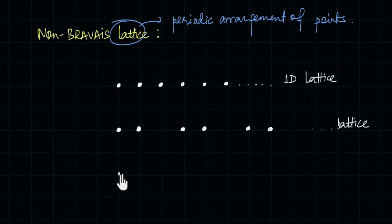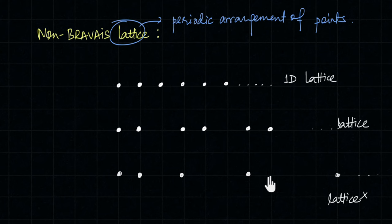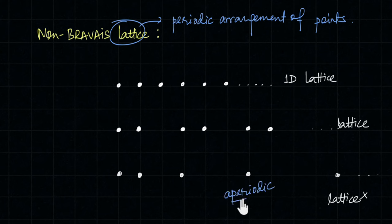What if I place a point, then after 1 unit, then after 2 units, then 3, then 4, and so on? This is not even a lattice, because the points are not repeating at regular intervals — there is no periodicity. So this is an aperiodic arrangement and therefore not a lattice.